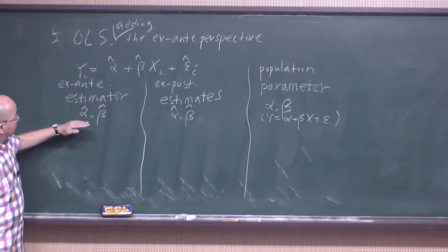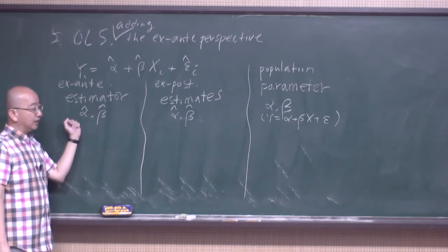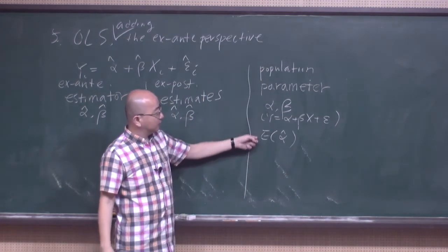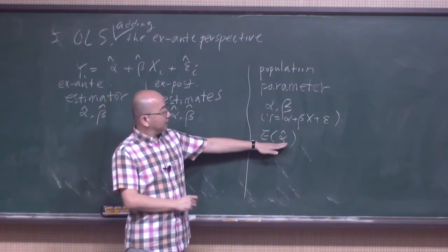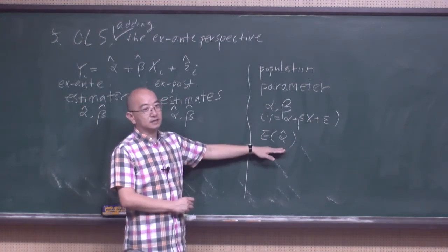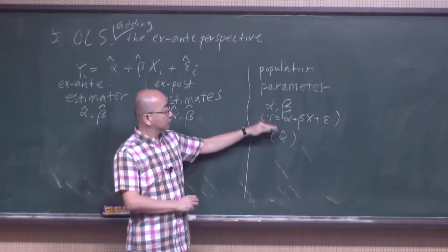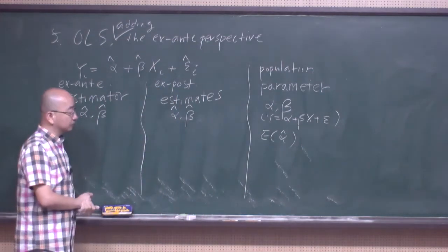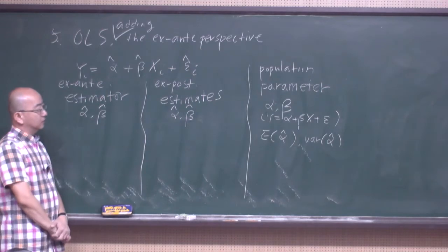Since alpha-hat is an estimate of alpha, consider the true mean of alpha-hat. What would be the relationship between alpha and the true mean of alpha-hat? If alpha-hat is a good estimate of alpha, then of course they should be the same. If they are different, alpha-hat is not a good estimate. While there is no strict requirement, if alpha-hat is a good estimator, then they should at least be close. Also, the variance of alpha-hat belongs in this framework.